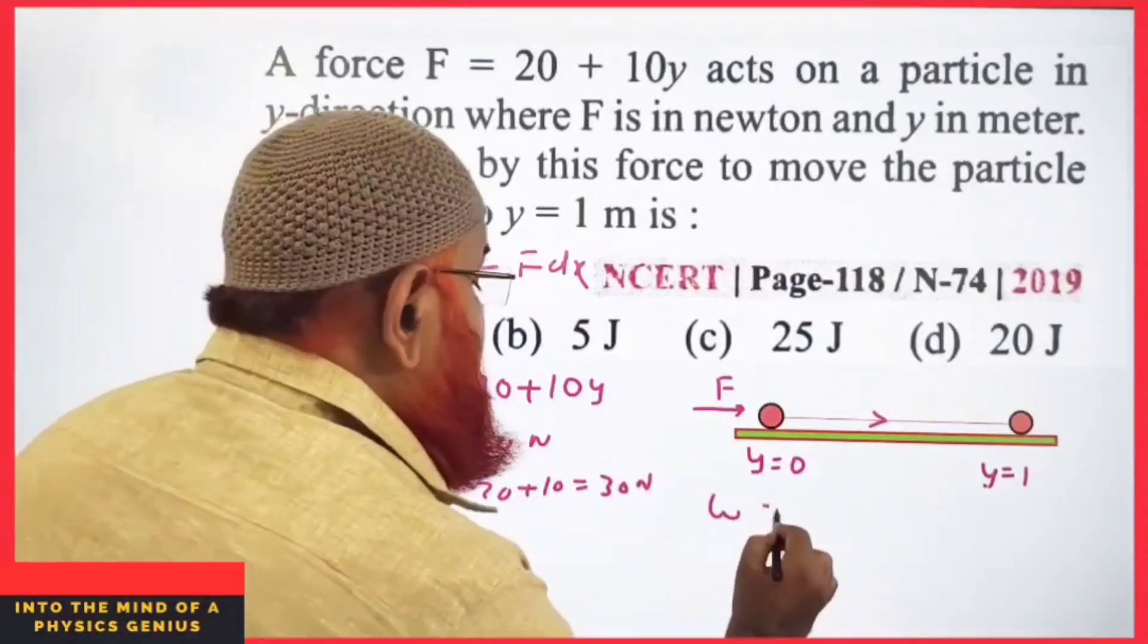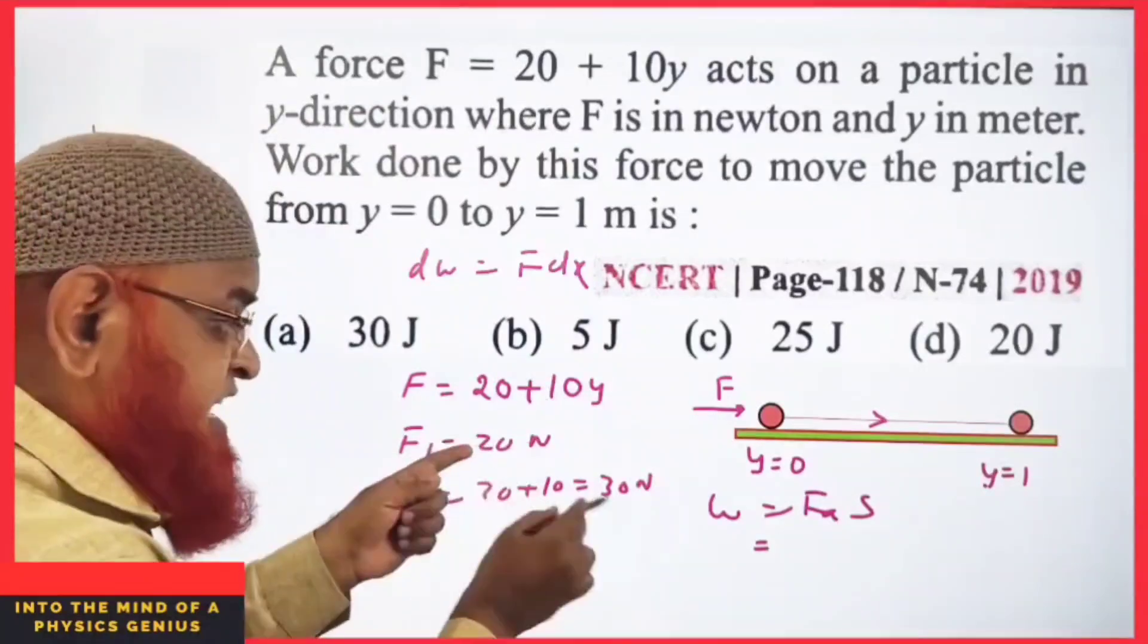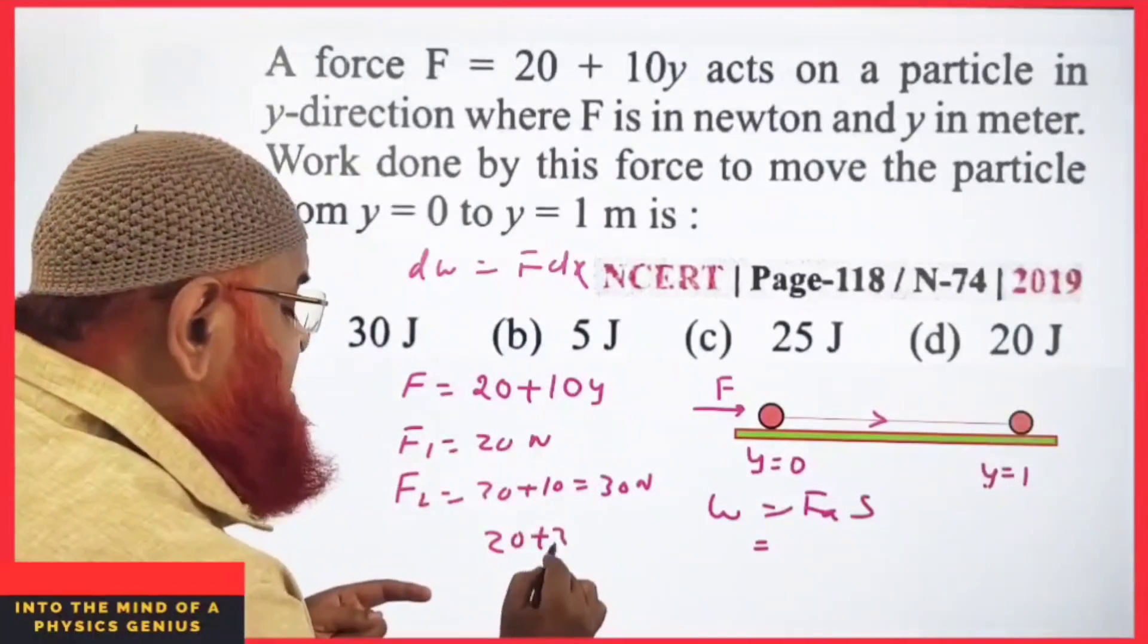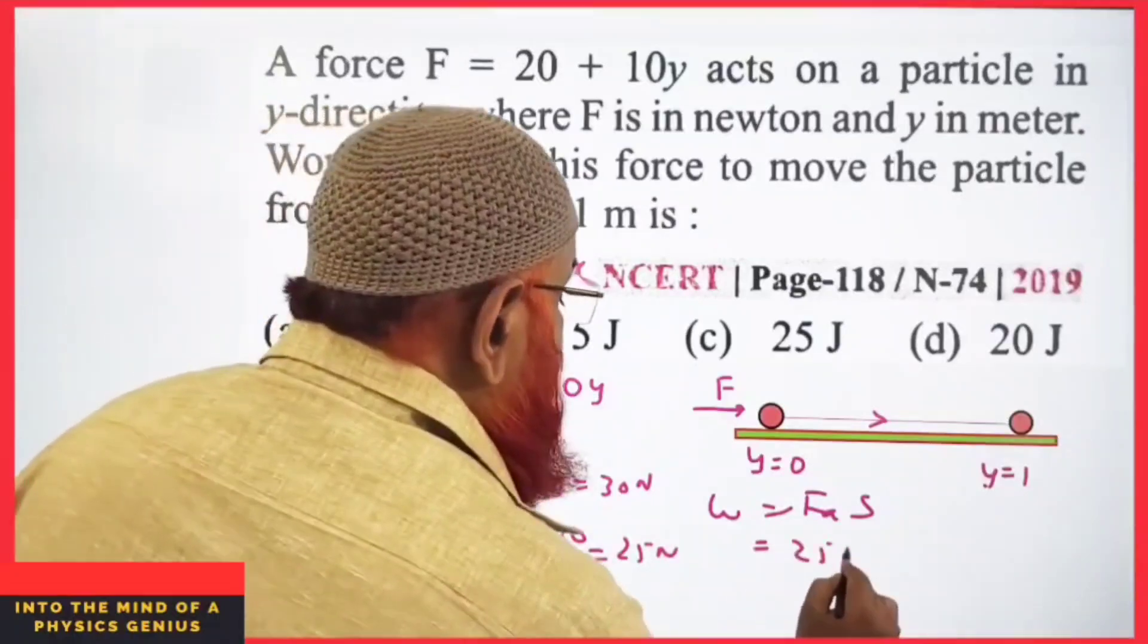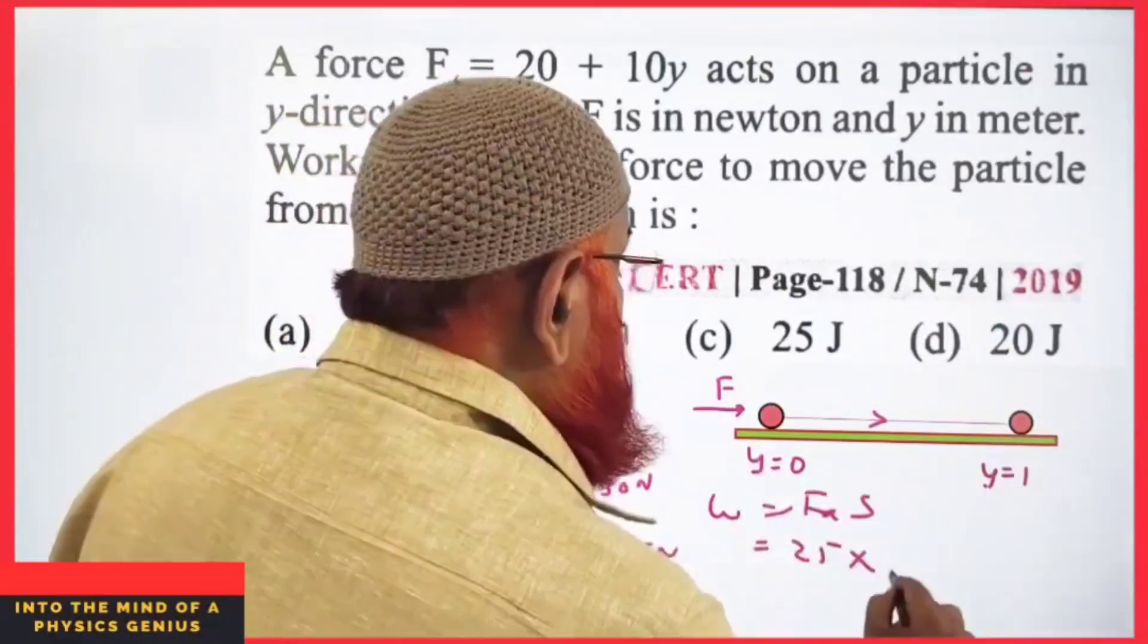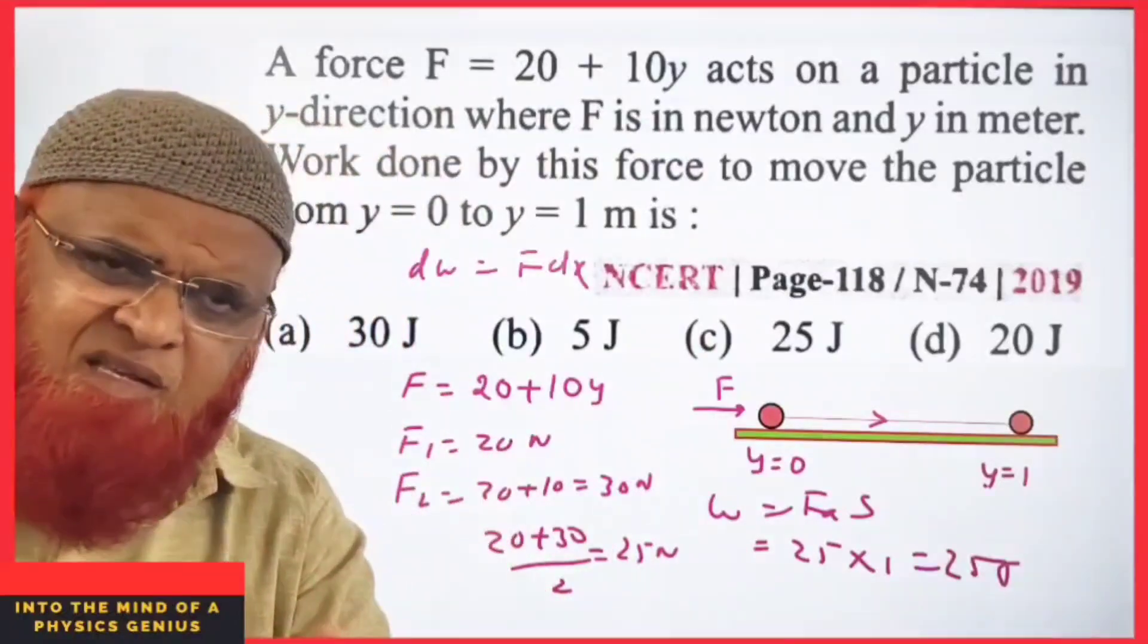Then you can find out work done is nothing but average force into displacement. Average force means you take average of 20 and 30, that is 20 plus 30 by 2 which is 25 N. Therefore you write 25 into displacement from 0 to 1 is 1. Your answer is going to be 25 joules. So simple method it is.